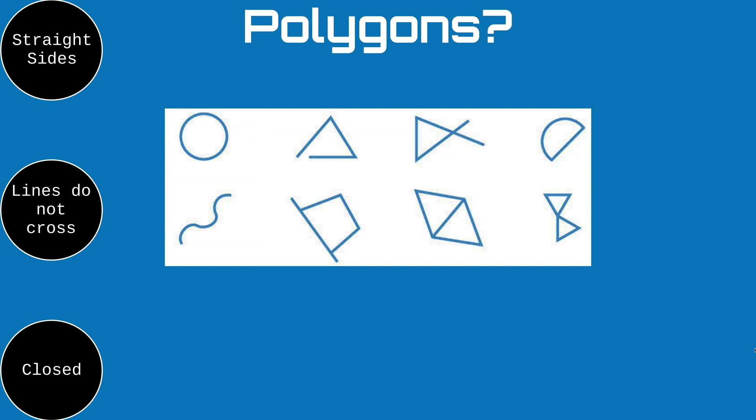The rest of these shapes are also not polygons. Take a moment to pause the video and look at each shape, and if you have somebody nearby, you can explain to them why each shape is not a polygon.